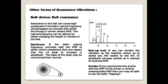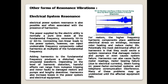Belt resonance: resonance in the belt can cause high amplitudes if the belt's natural frequency coincides with either the driving or driven sheave RPM. The natural frequency can be altered by either changing the length or tension of the belt. If the belt's natural frequency coincides with the RPM of either driven component, you can expect the 1x peak to increase in amplitude, and the base of the peak may be broader than normal. In a run-up test, you will expect to see the 1x amplitude increase quickly as the machine reaches its nominal RPM. Using a strobe synchronized with the driven or driving sheave RPM, you may be able to see the belt flapping.